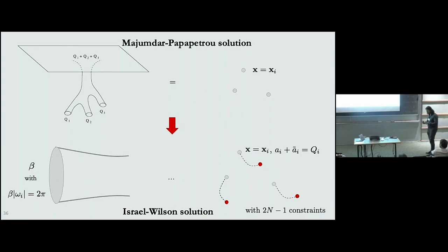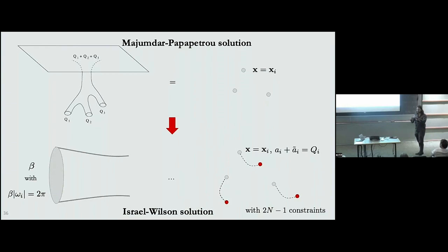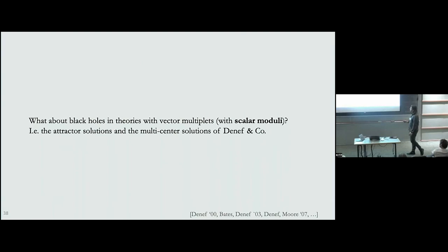The conclusion in this case is that if you start out with a Lorentzian extremal solution and think it might contribute to the index, what you should actually consider is the Euclidean solution with finite temperature, where the centers in Majumdar-Papapetrou are split into pairs of centers and anti-centers. This solution is completely smooth and has no infinite proper distances — all the throats are finite.